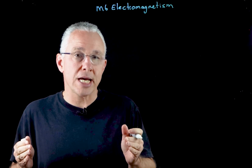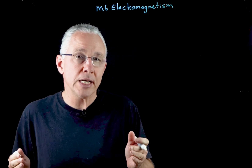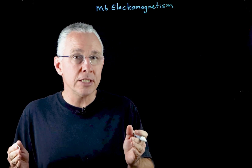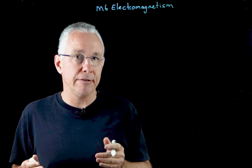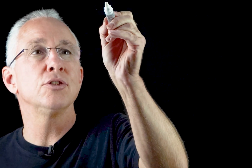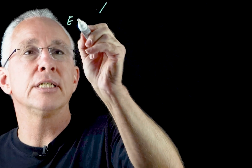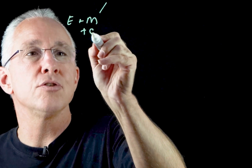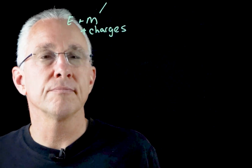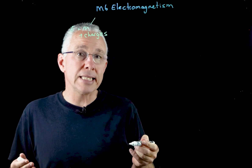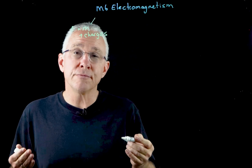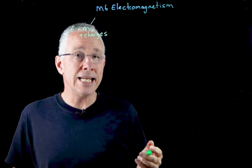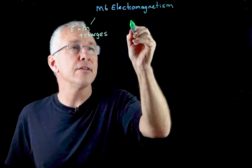The first inquiry question deals with charges — specifically, what happens to stationary and moving charges when they interact with electric fields and magnetic fields. For our summary, we're looking at electric fields, magnetic fields, and charges. The next inquiry question asks under what circumstances is a force produced on a current-bearing conductor in a magnetic field — in essence, it's the motor effect.